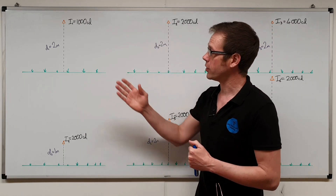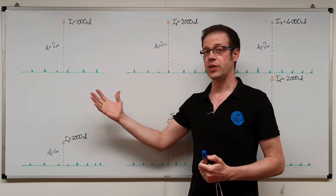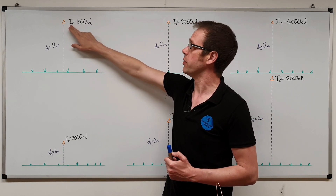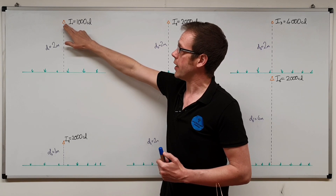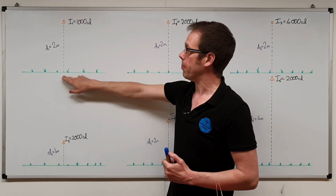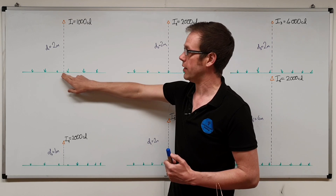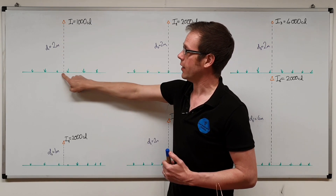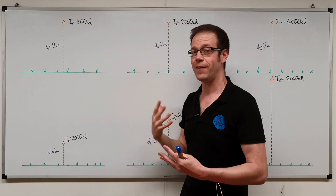On the board behind me I've got six different examples of questions, and in each one there is a change in a value. This is a very typical exam question — you'll be given a light source point and told its luminous intensity, perhaps a thousand candelas, and then given a distance that light point is mounted above a surface. The question is typically to calculate the illumination level directly below the lamp — just a single point on that surface.